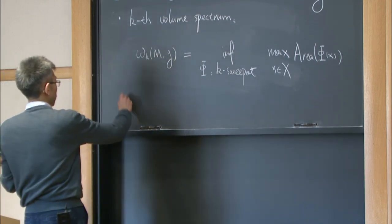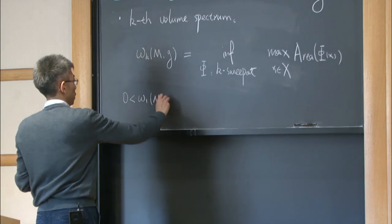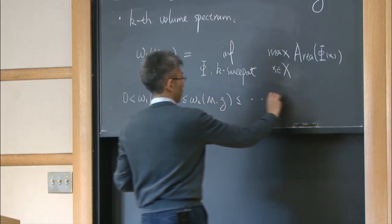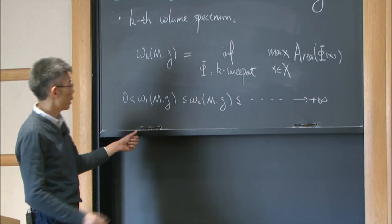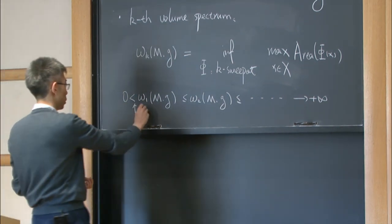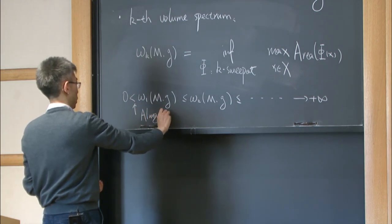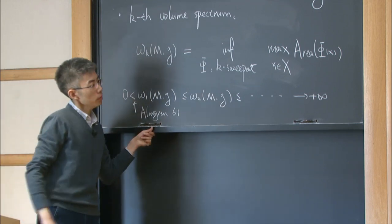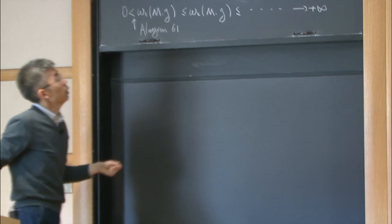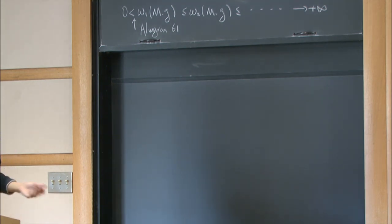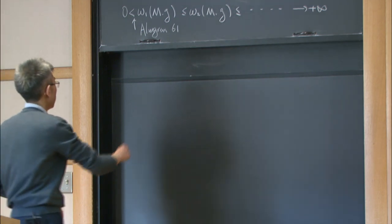We know that omega_k satisfies the following: it is a non-decreasing sequence of positive numbers. The strict inequality is very hard to prove and is due to Almgren in his very first paper. Now we define these critical values and ask whether they are associated with critical points, which are minimal surfaces. That's the hard analytical part of the theory — the min-max theorem.